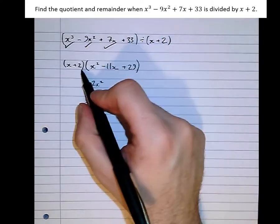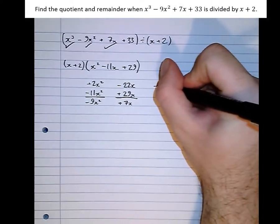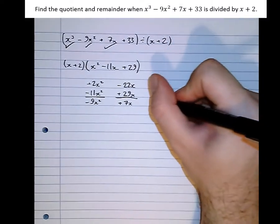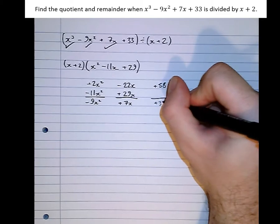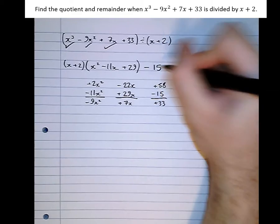However, once again, an unwanted consequence of what we've just done, we've now got positive 58. Whereas actually we need positive 33. We can get that by taking away 15. So take away 15.